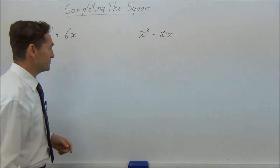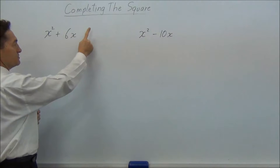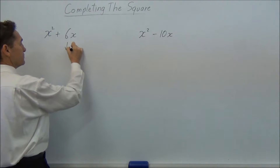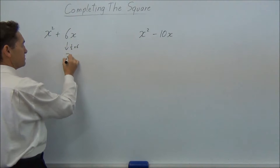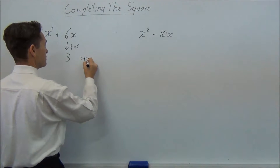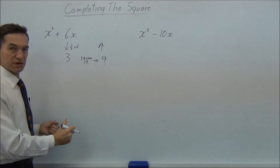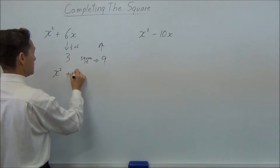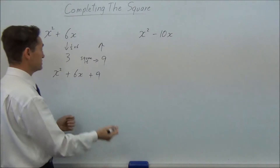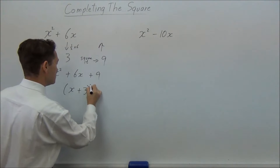G'day again. Back for some more of completing the square. So here we've started off with x squared plus 6x. We want something to go there. Our method is to halve it — half of 6 is 3 — and then square it, which gives us 9. So that 9 is going to go there. So we will have x squared plus 6x plus 9. The other way to express it is using that 3, so all this equals x plus 3 squared.